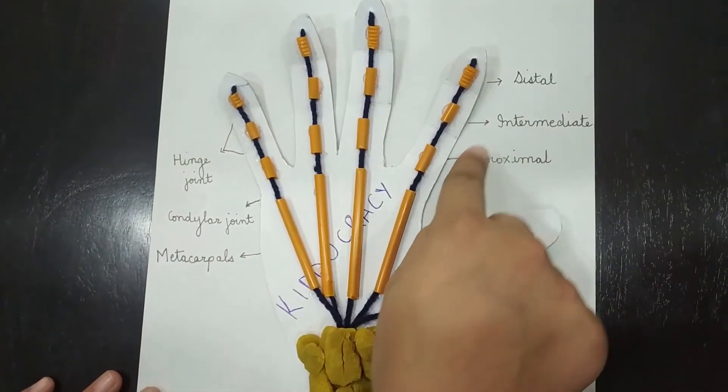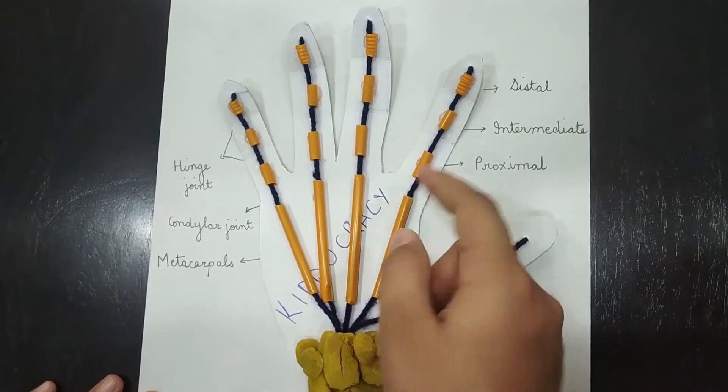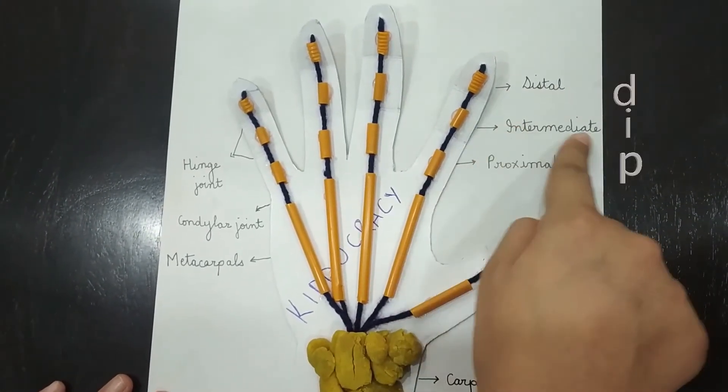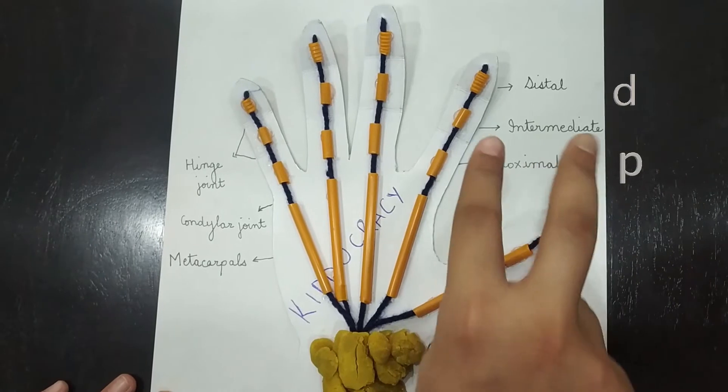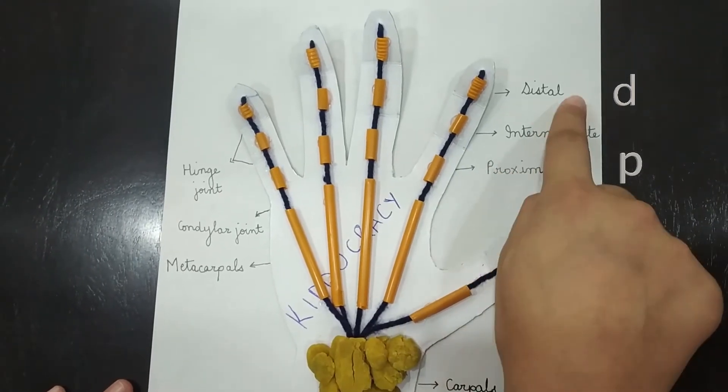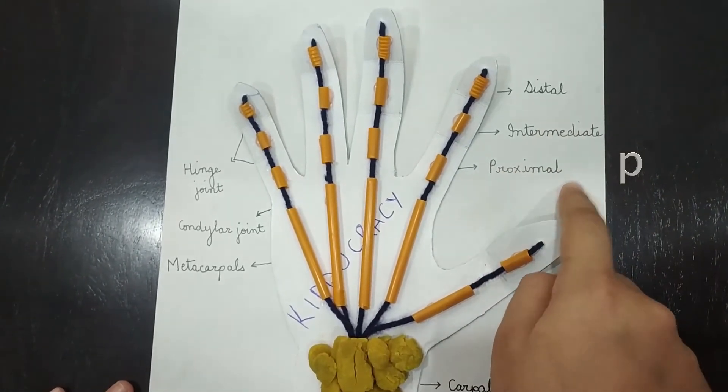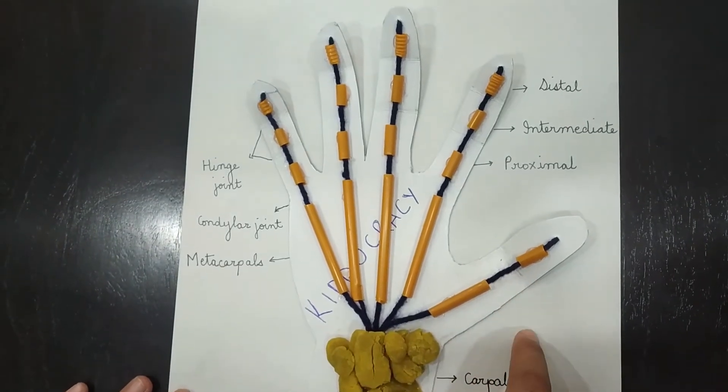Distal, intermediate and proximal, which can be remembered with the acronym DIP: D-I-P, distal, intermediate and proximal. The thumb has only two phalanges, distal and proximal. There are a total of 14 phalanges in one hand.